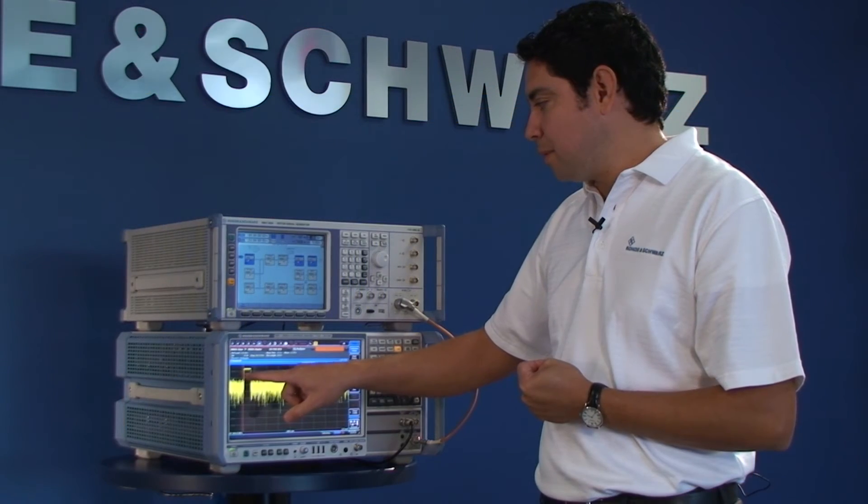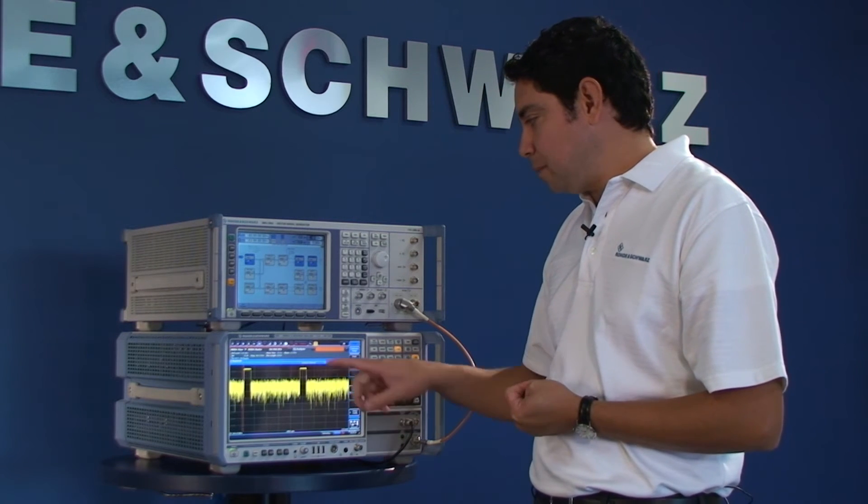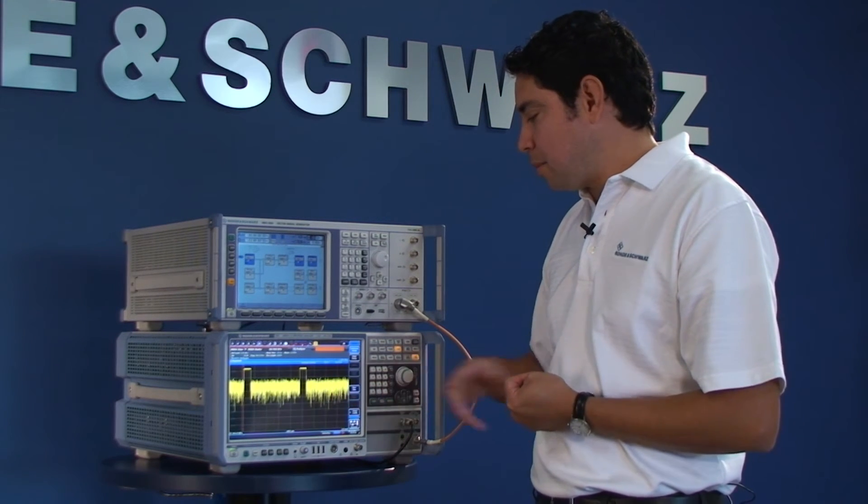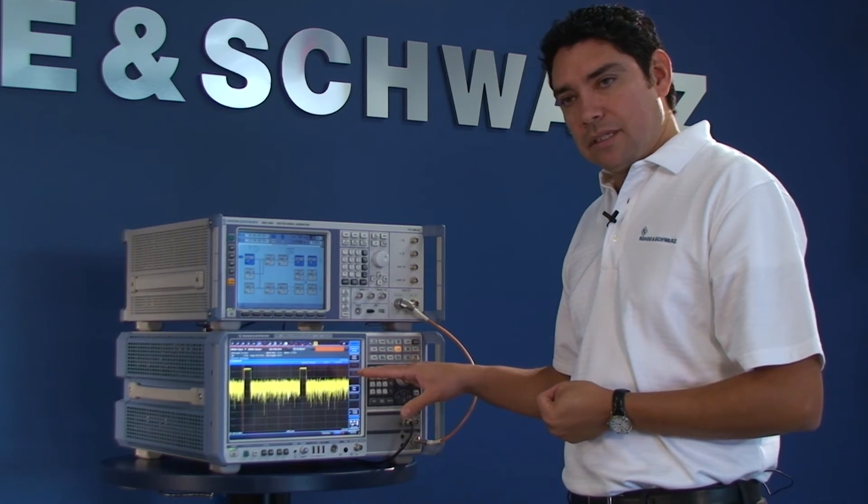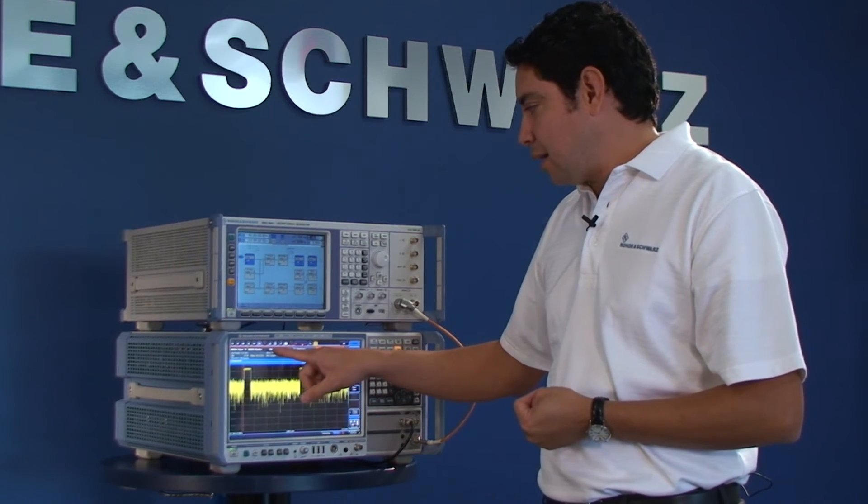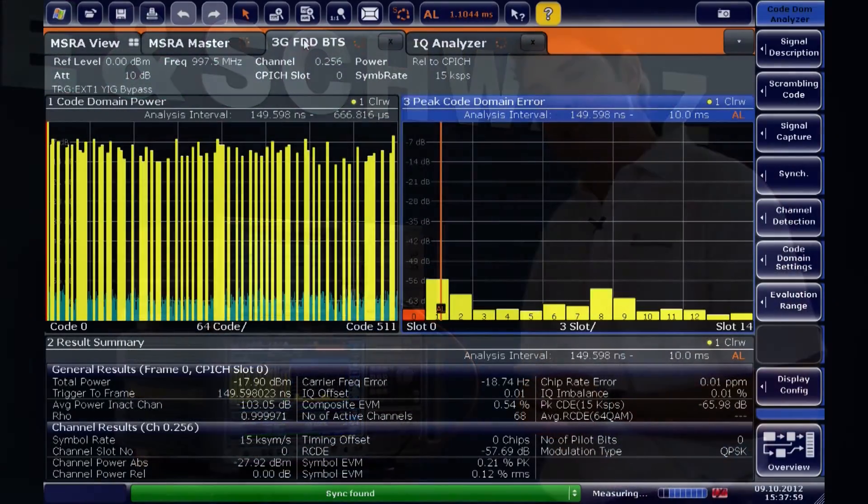And this marker, wherever I put this marker, I can utilize the touch screen or the input parameter. It will show up in all of my measurement views. So I can go back into my UMTS view, and I can see the same marker now shows up in those time domain measurements.